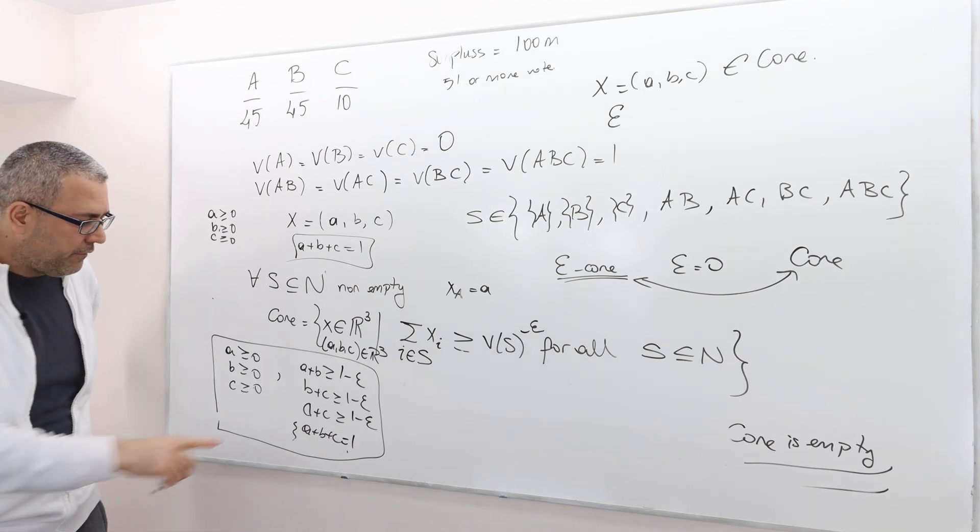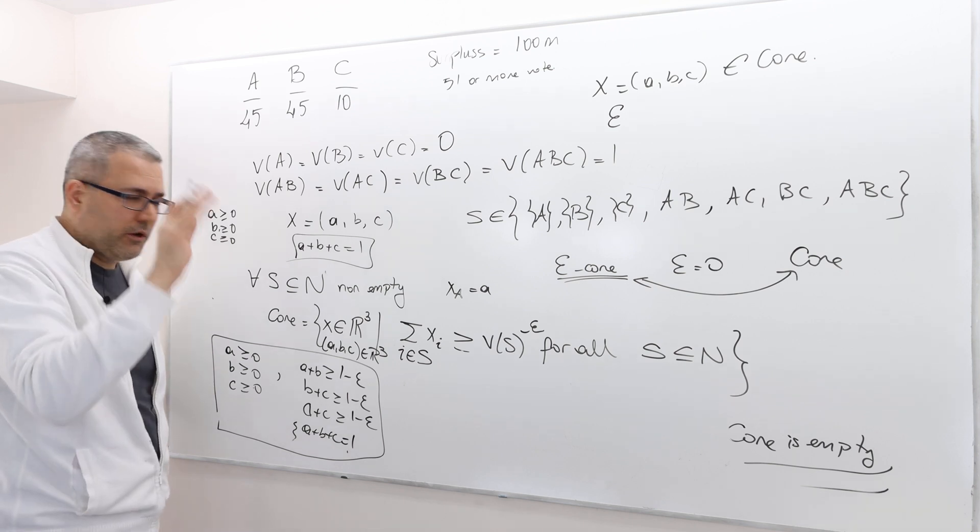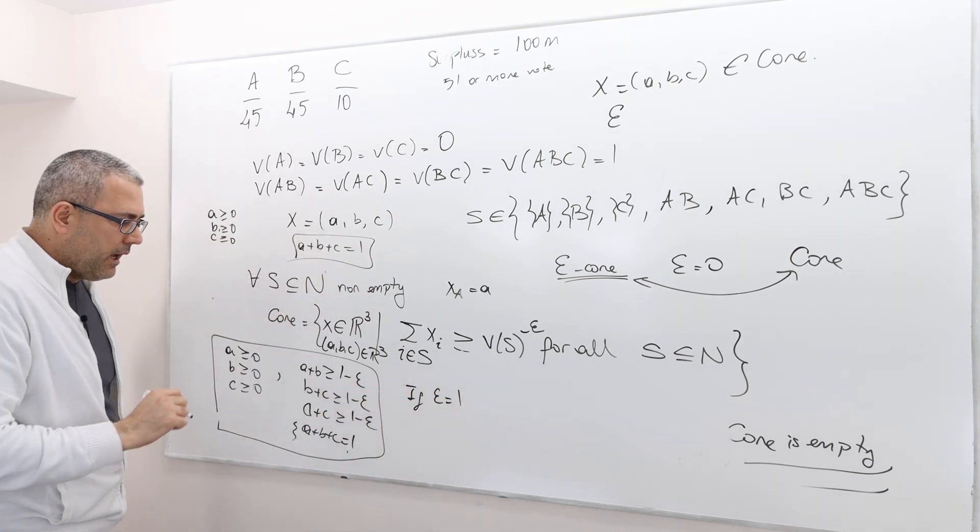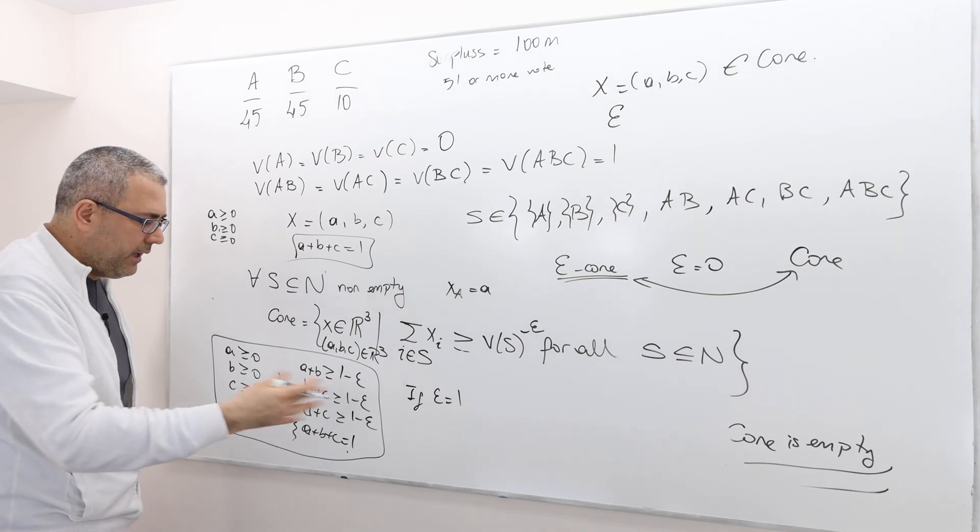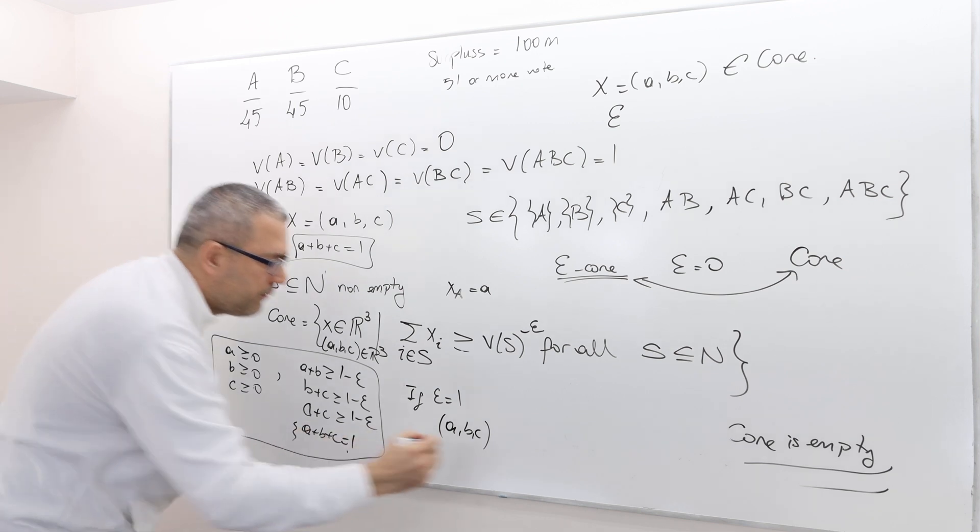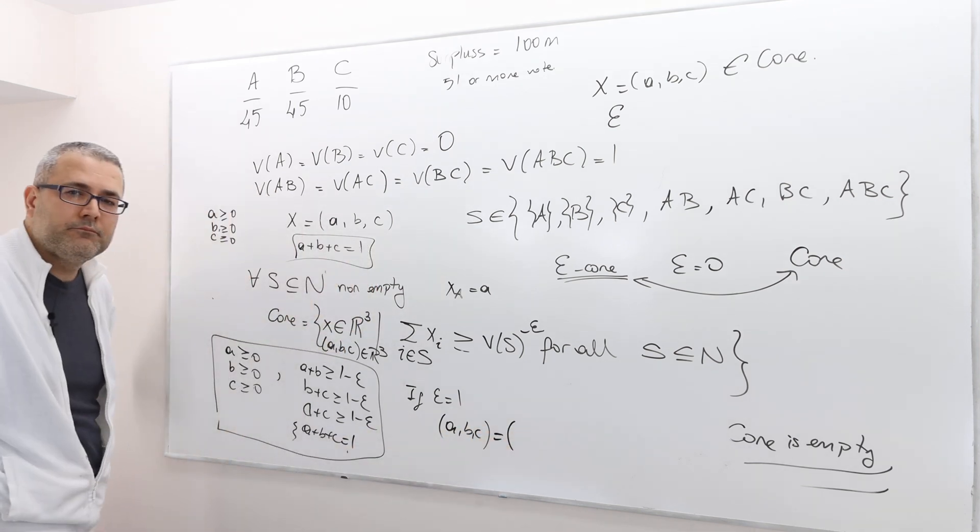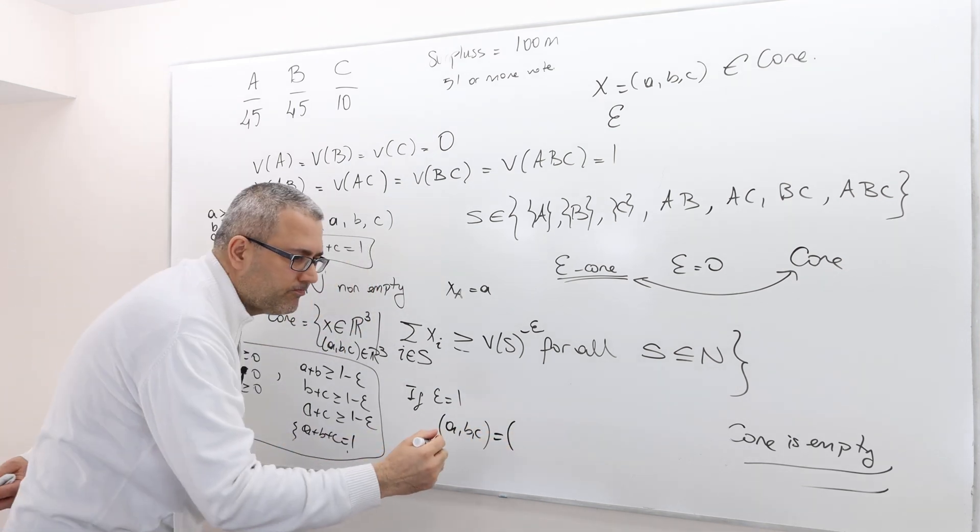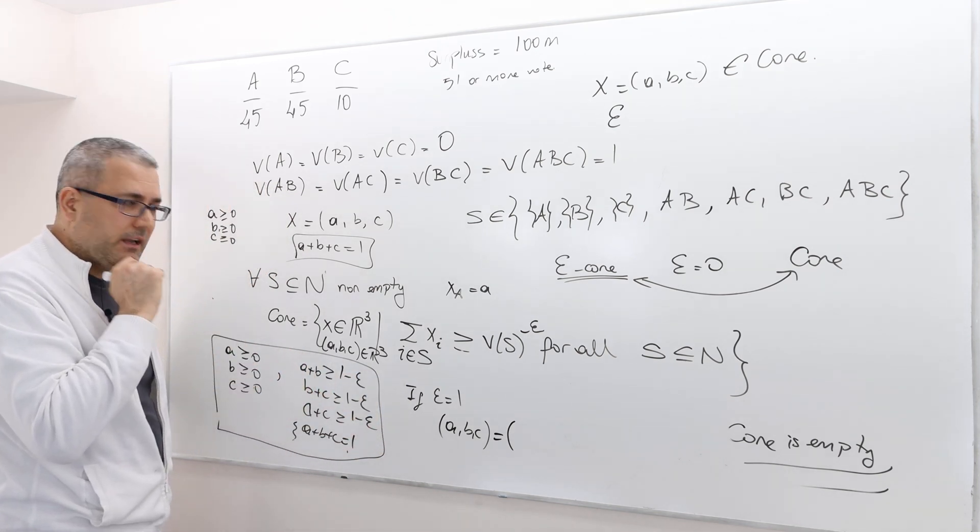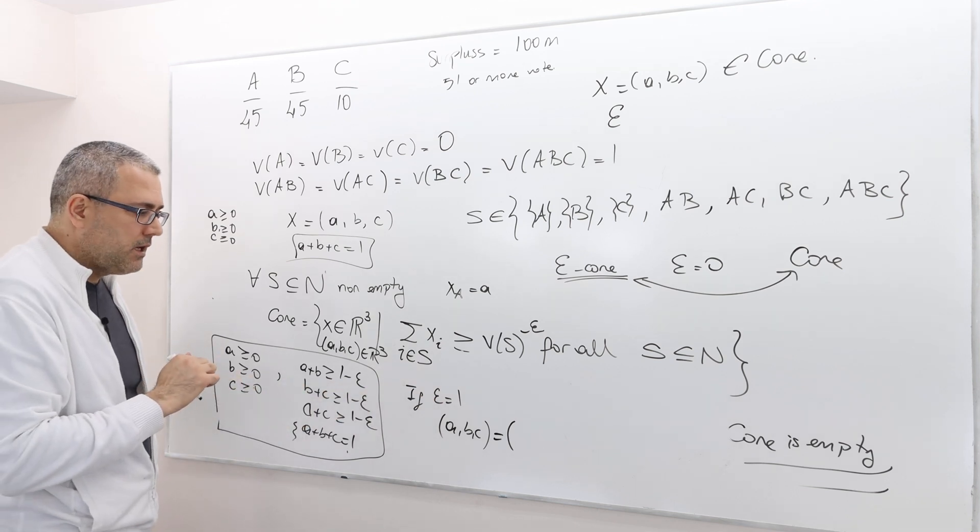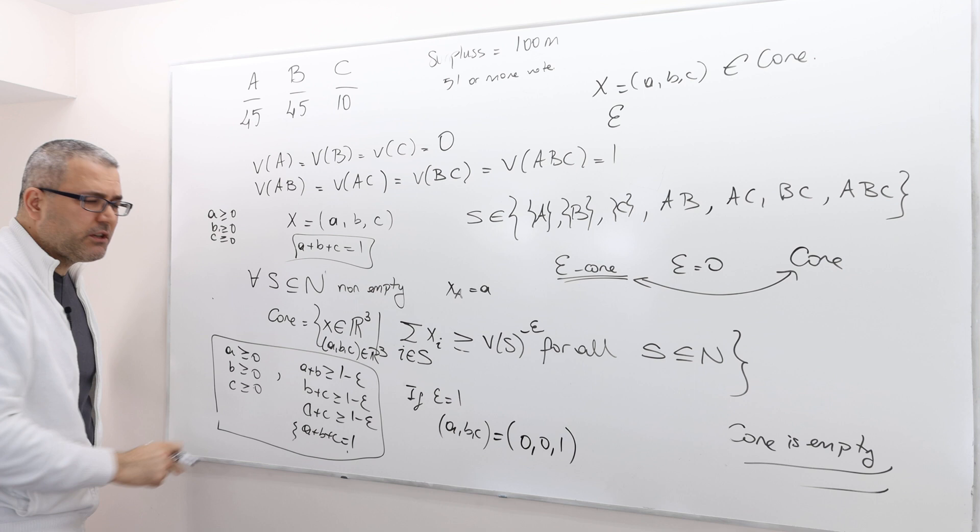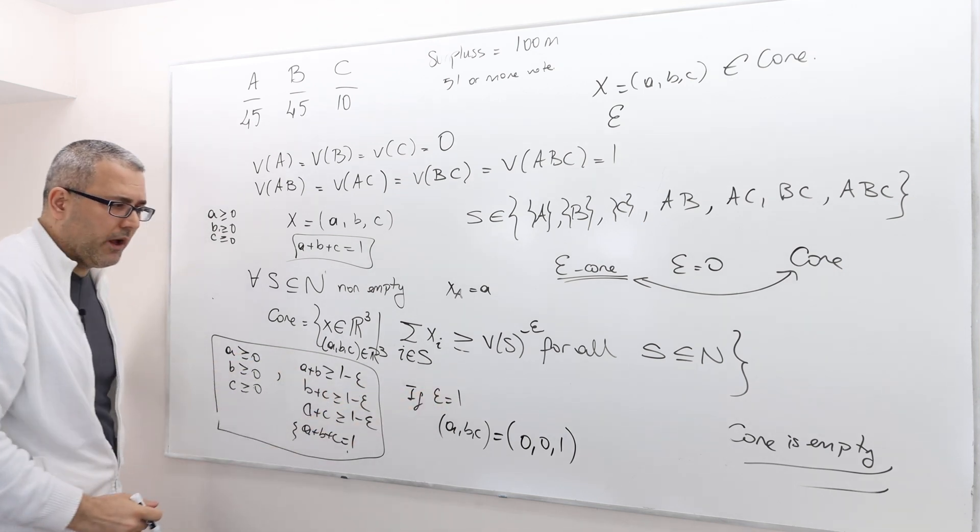So for example, if epsilon is 0, I'm sorry, if epsilon is 1, can you suggest me a payoff vector A, B, C that is going to be 1 core? Any suggestion? Epsilon is 1. 0, 0, 1. For example, 0, 0, 1 is in epsilon core when epsilon is 1.